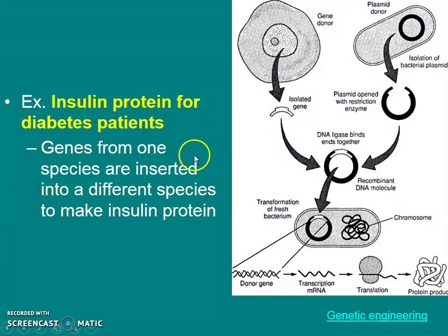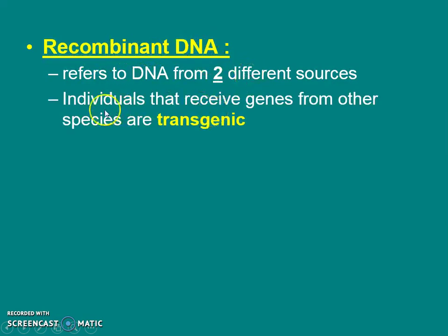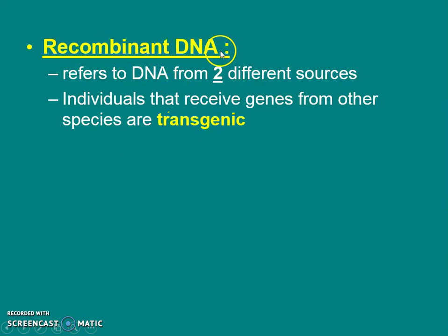It's all about combining DNA from two different sources. We call that recombinant DNA — the word 'combine' is right in it. An organism that has DNA from two different sources is also called transgenic. Transgenic is something that has recombinant DNA in it.